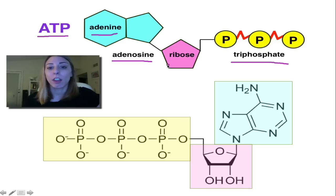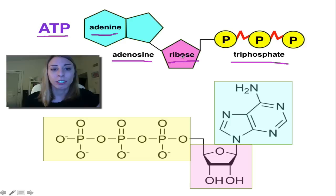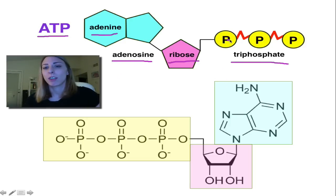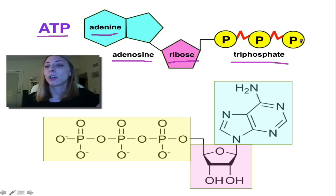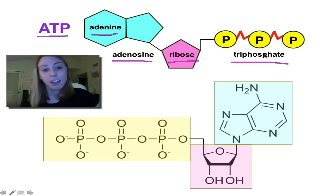And then we also have a ribose sugar, which is here in the pink. Those two things hooked together make up the adenosine. And then we have triphosphate — three phosphate groups that are hooked together with chemical bonds here at the end.